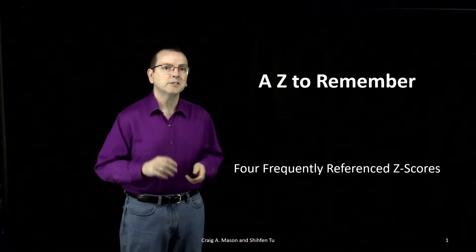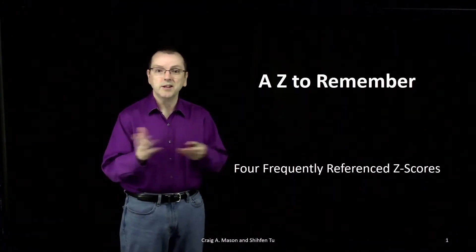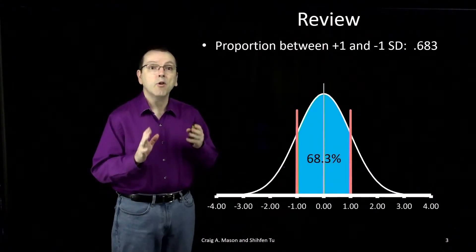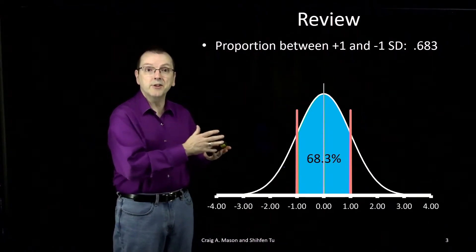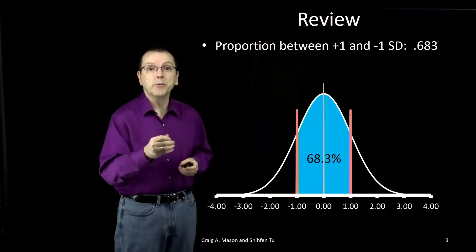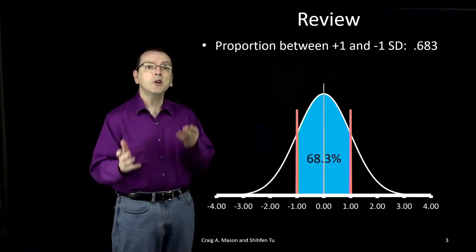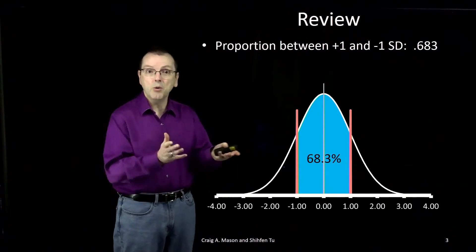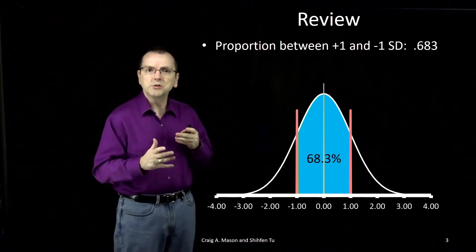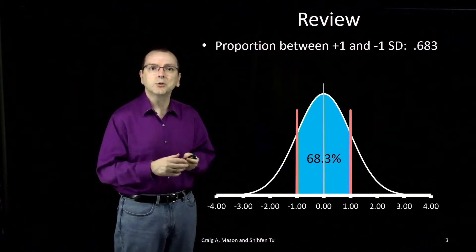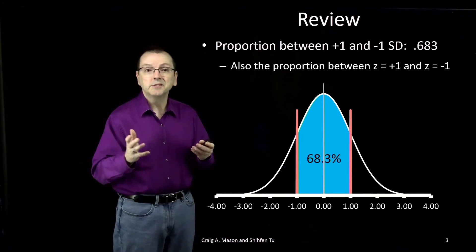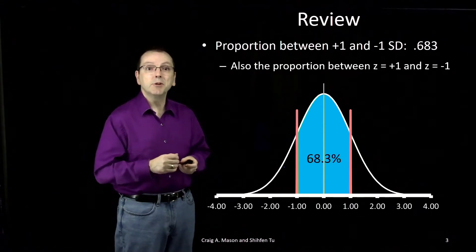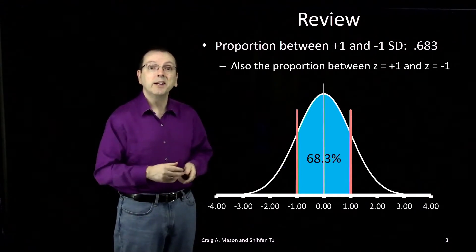It can help avoid some confusion later on when you need to use one of them. Previously we discussed how the area under the normal curve between plus and minus one standard deviation was 0.683, or 68.3% of the normal distribution. And because z-scores are just how many standard deviations a score is above or below the mean, this also means that 68.3% of the distribution is between a z of positive one and a z of negative one.